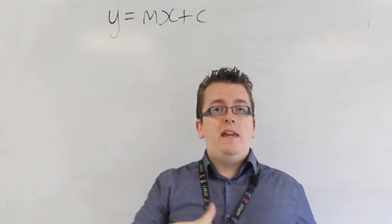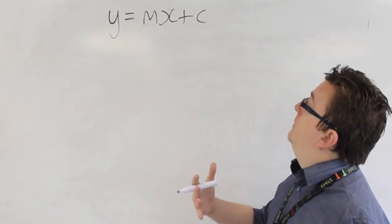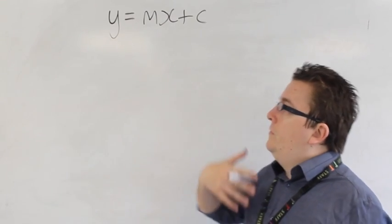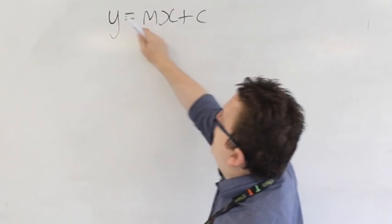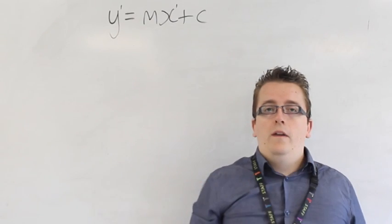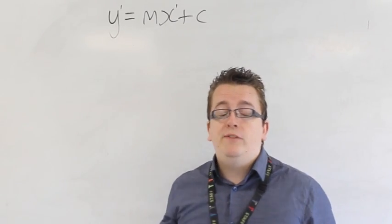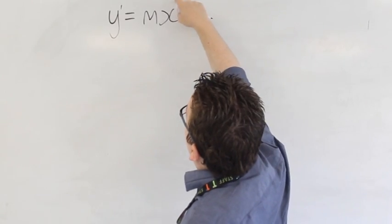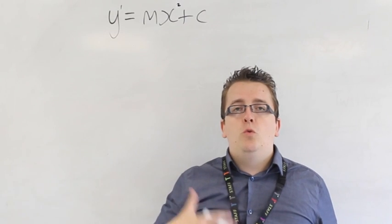You should already be fairly familiar with that from GCSE. But we call them linear graphs because the powers of x and y are 1. If the power is any greater, if the power here for x was actually 2 and x squared, then we would have a quadratic.